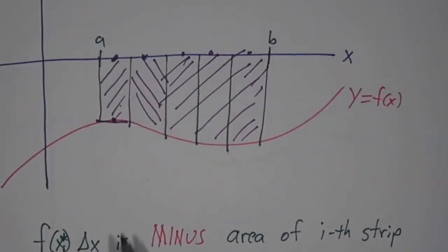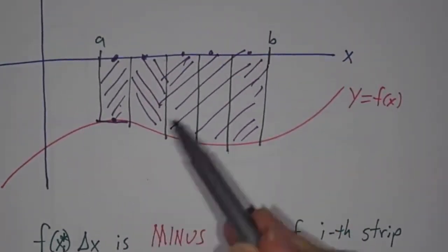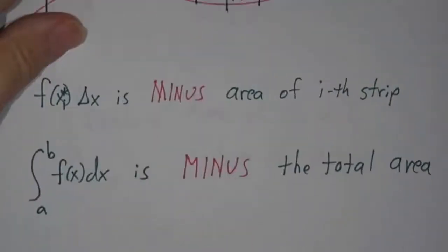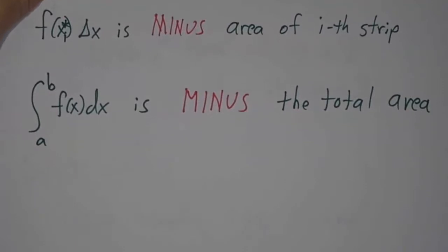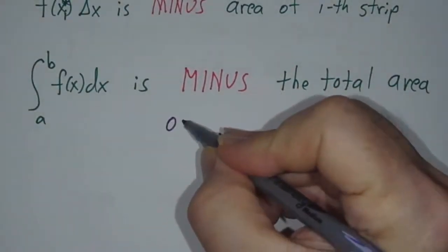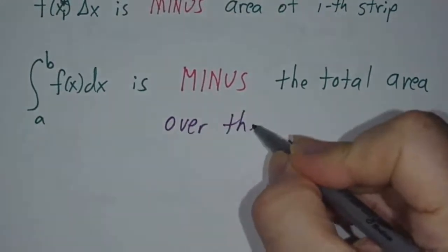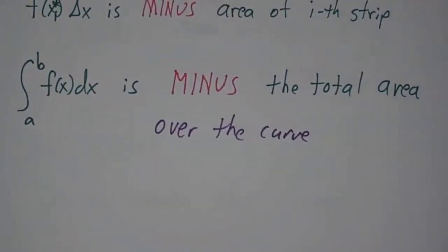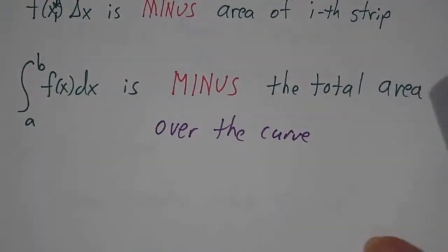So in this case, you don't get the area under the curve, you get minus the area over the curve. So when the function is negative, the integral is negative even though areas, of course, are always positive. So you don't get the area over the curve, you get minus the total area over the curve.